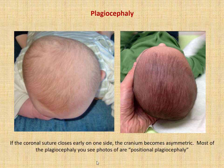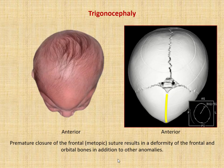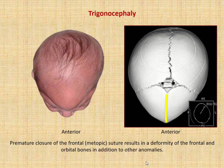Most of the plagiocephaly you see in photos is called positional plagiocephaly, which isn't something that happened during development — I wanted to point that out since the pictures shown here are of positional plagiocephaly, as I couldn't find a picture of developmental plagiocephaly. Trigonocephaly is where you have premature closure of the frontal or metopic suture, resulting in a wedge-shaped forehead because growth cannot occur in the horizontal plane.